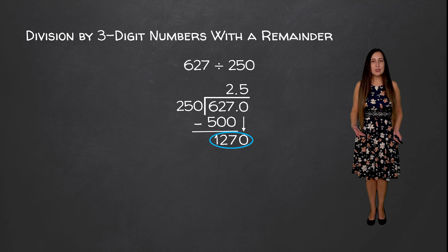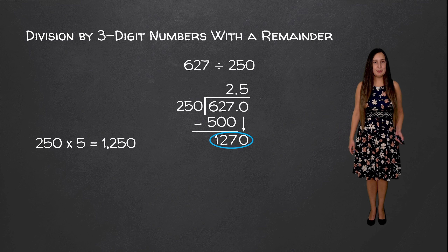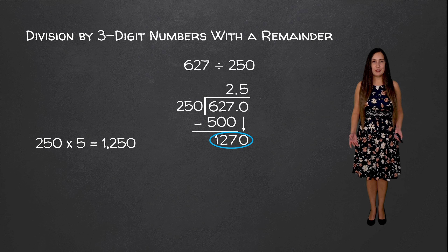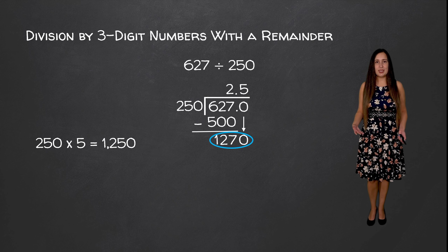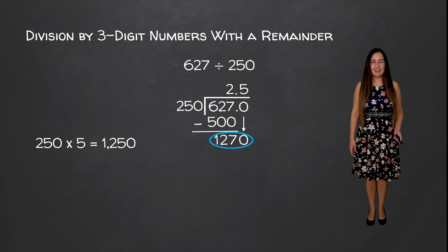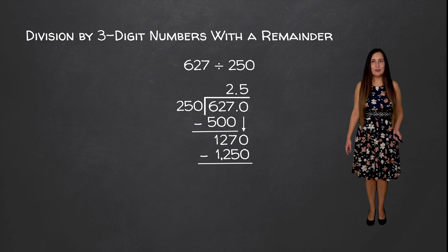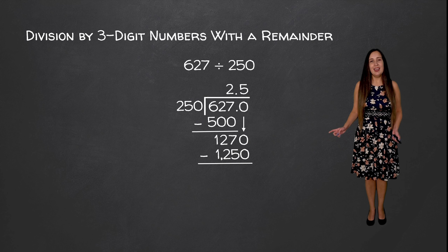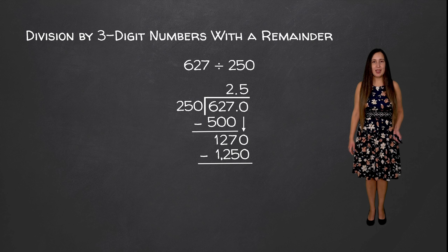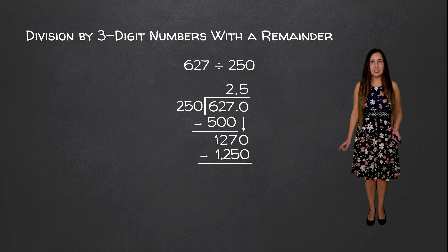It goes in five times, because 250 times 5 is equal to 1250, which is as close as we can get without passing that value. So we're going to subtract these two values to see what we have remaining. 1270 minus 1250 is equal to 20.